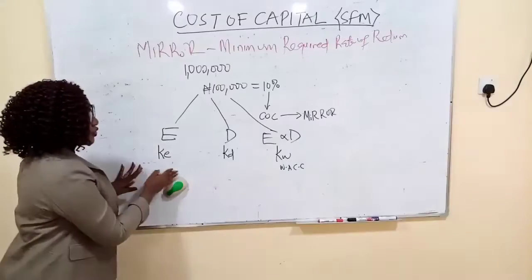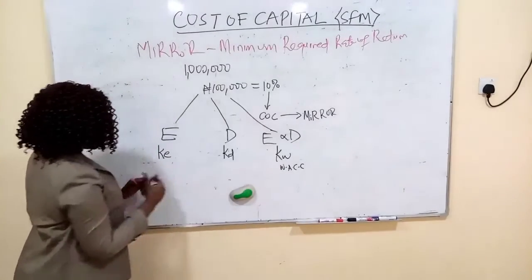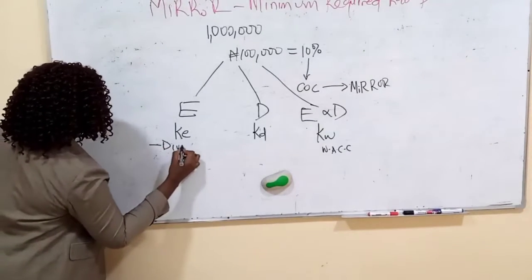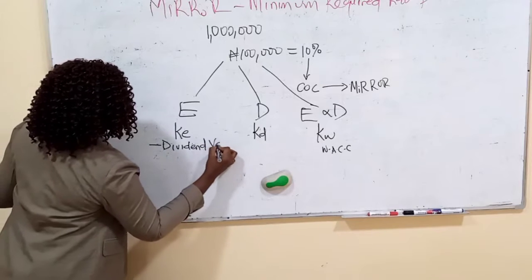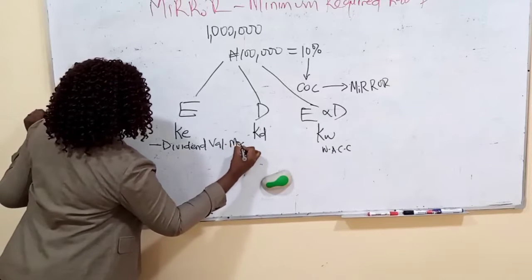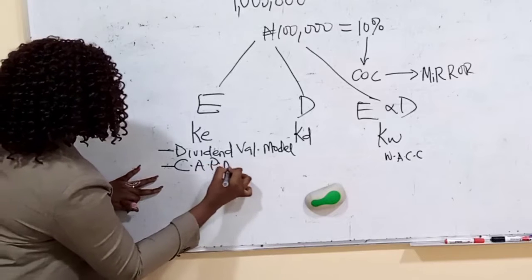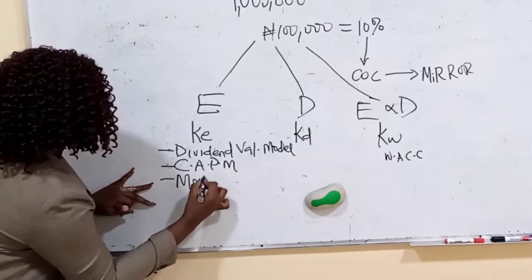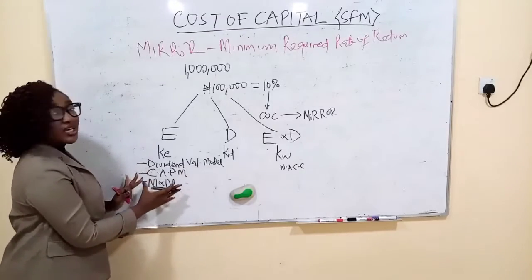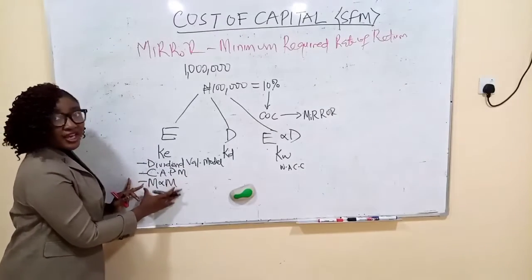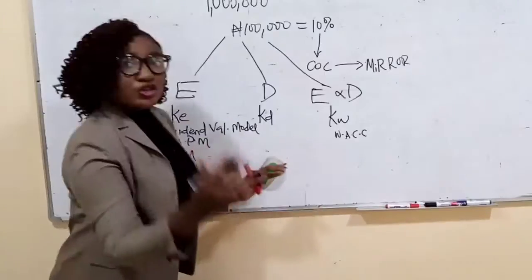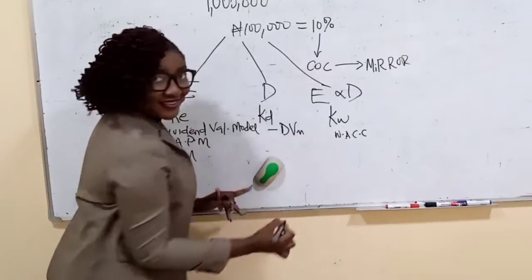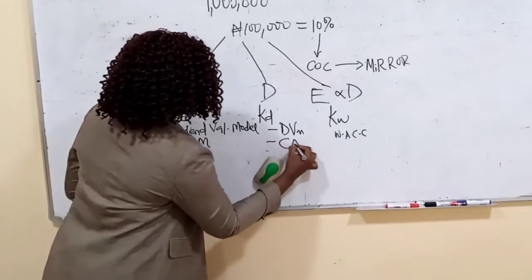Let's start with cost of equity. There are three major approaches to determining cost of equity: the Dividend Valuation Model, the Capital Asset Pricing Model, and the Modigliani and Miller approach. When you want to find cost of debt, you also have the Dividend Valuation Model and the Capital Asset Pricing Model.